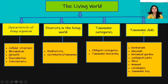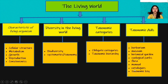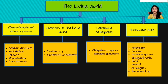Our taxonomists and biologists have provided us some aids and sources to make the study of organisms easier: Herbarium, Museum, Botanical Gardens, Zoological Park, Flora, Manuals, Catalog, and Taxonomic Key. All these taxonomic aids are going to help us study the classification of organisms.